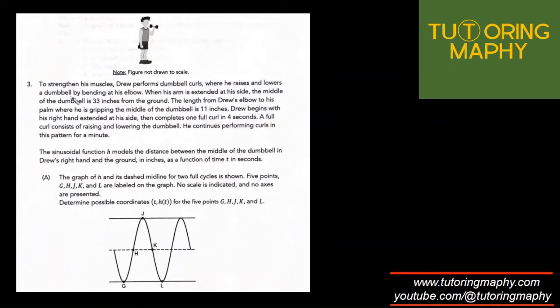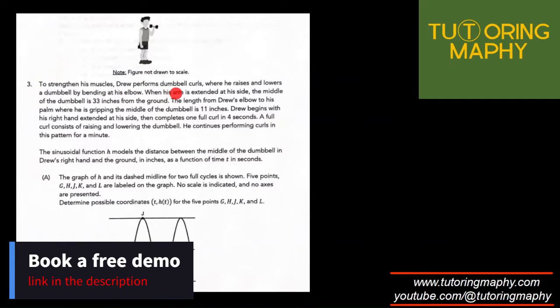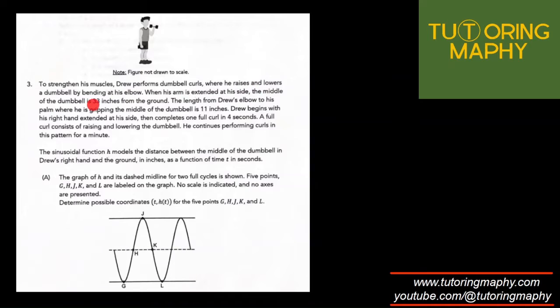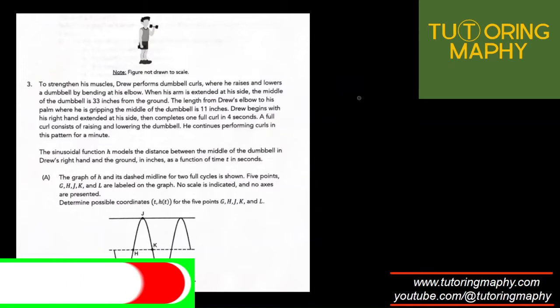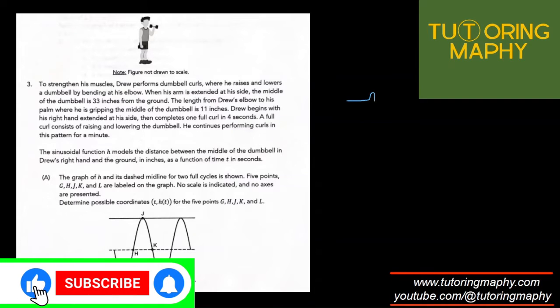To strengthen his muscles, Drew performs dumbbell curls where he raises and lowers the dumbbell by bending at his elbow. When his arm is extended at his side in the relaxed position, the middle of the dumbbell is 3 inches from the ground.